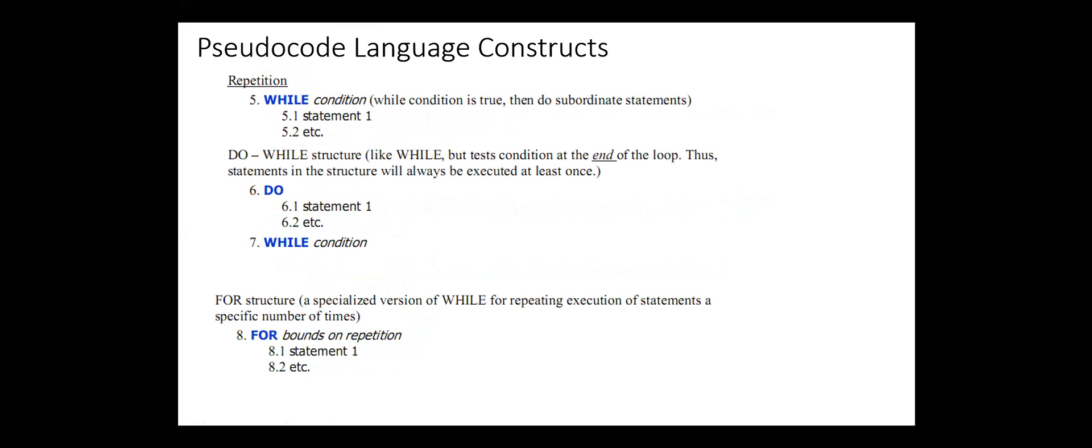Repetition constructs: while, do while, and for. In the while construct, while the condition is true, then we continue performing the statements. In the do while structure, the condition is tested at the end of the loop. So in the do while structure, these statements will be executed at least once. In the for structure, we repeat executing a group of statements a specific number of times.